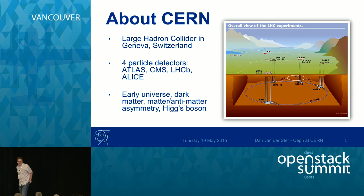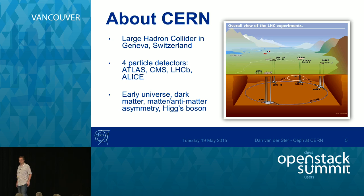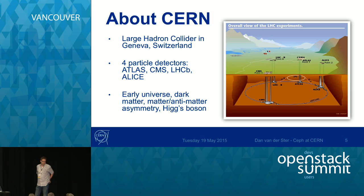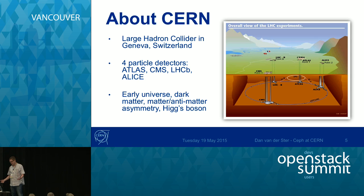CERN, as you probably know, is in Geneva, Switzerland. We have the Large Hadron Collider, the biggest machine in the world. At four corners of this big particle accelerator, there are these particle detectors — what we call experiments: ATLAS, CMS, LHCb, and ALICE. We do fundamental physics research about things like the early universe, dark matter, and the Higgs boson. You've probably heard about it.